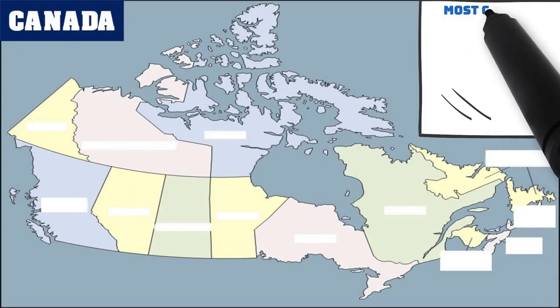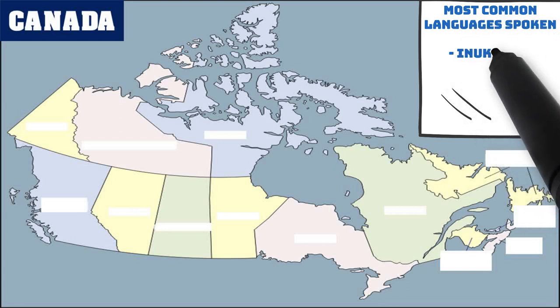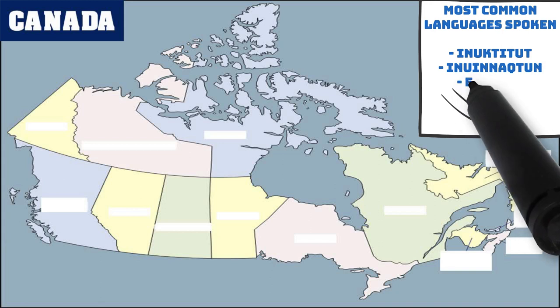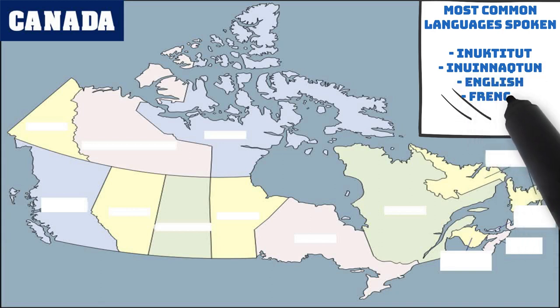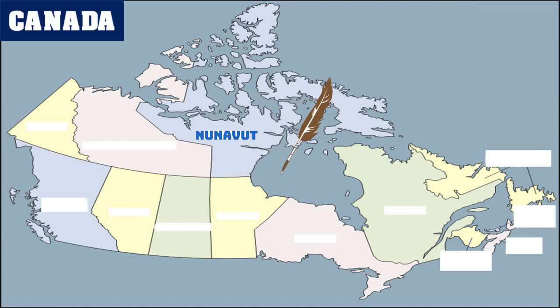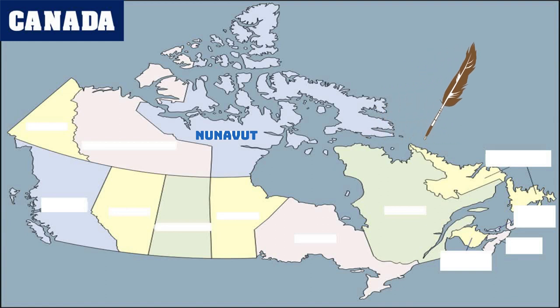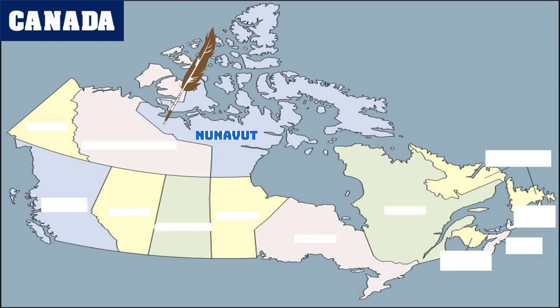The most common languages spoken are Inuktitut, Inuinnaqtun, English, and French. Nunavut is located in these areas, and as you can see, it's made up of many islands.